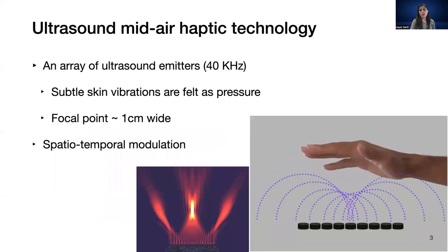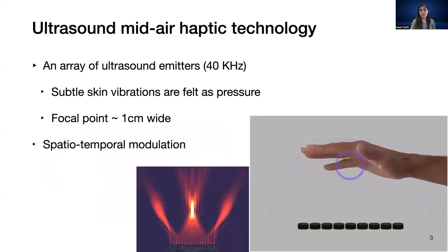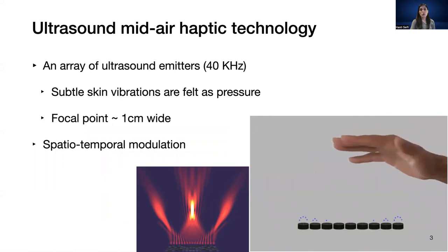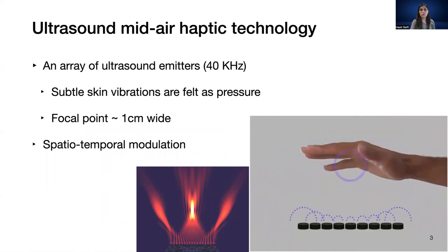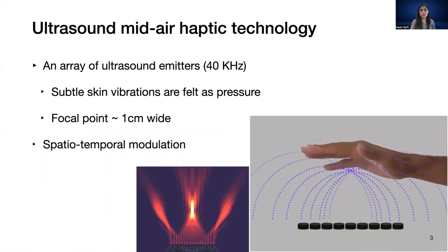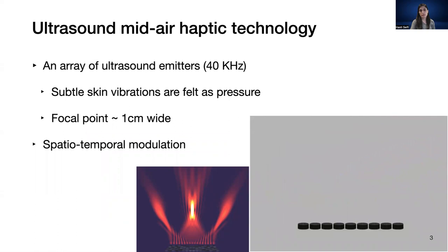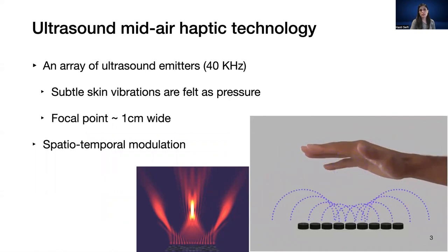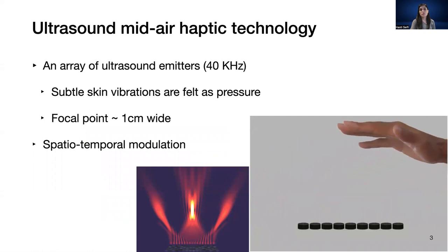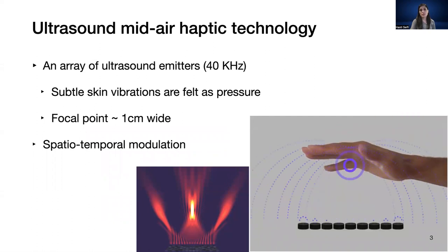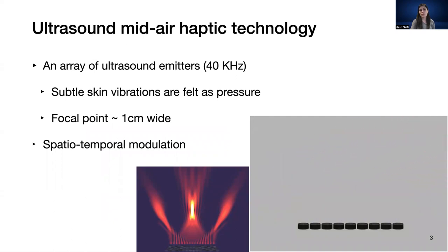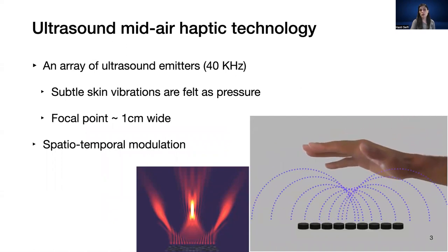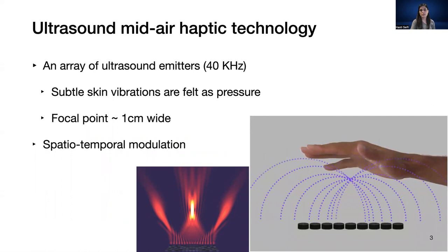With this technology, you have an array of ultrasound transducers. You can turn them on and off at a rapid high rate, around 40 kHz, to create a focal point on the user's hand. This focal point creates subtle skin vibrations, which is felt as a pressure point to the user. You can move this focal point around in a 3D space to create a variety of spatiotemporal patterns.